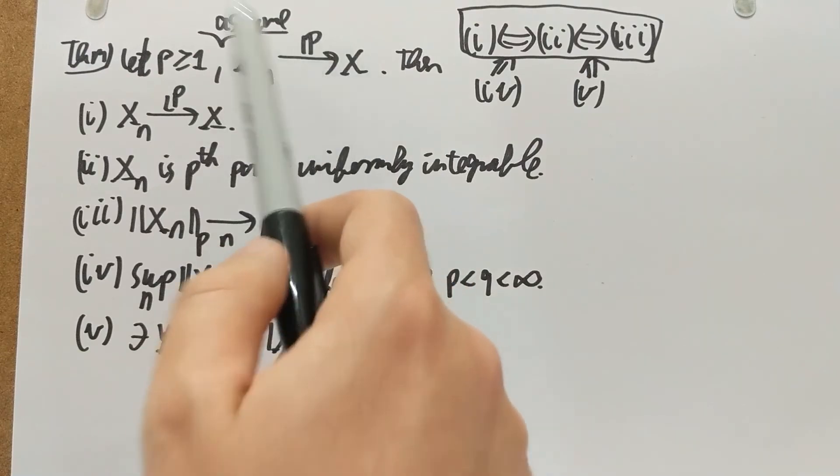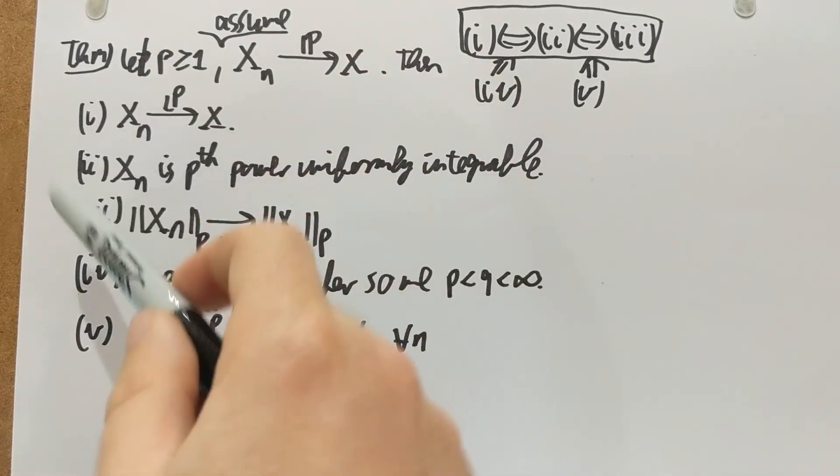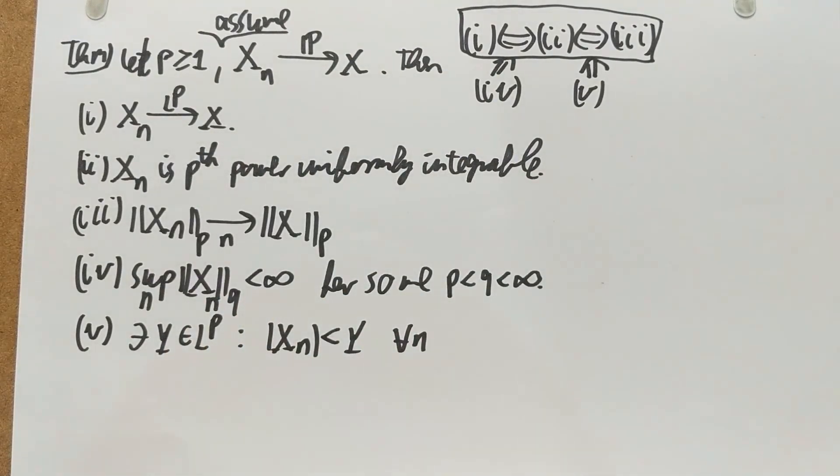Assume you have convergence in probability, assume you can show uniform integrability, then you also have lp convergence. So you could go back in that theorem we saw a bit earlier about modes of convergences. We can go back from in probability to lp if we have uniform integrability. That's probably the most important way of using this theorem.